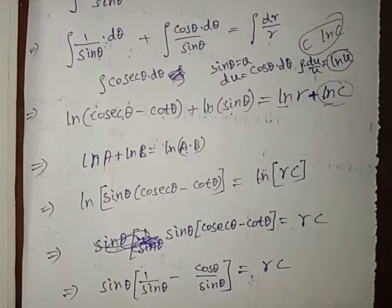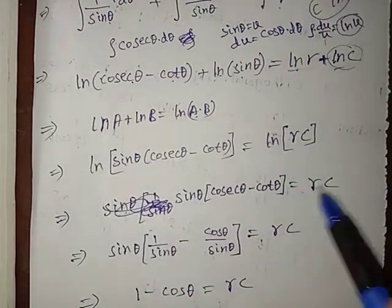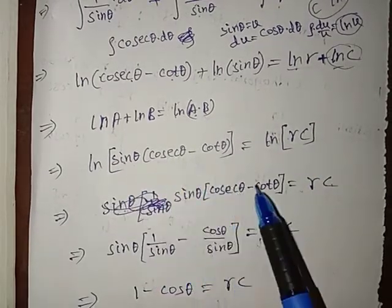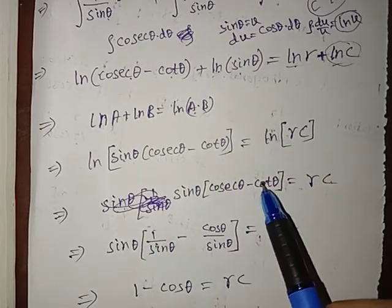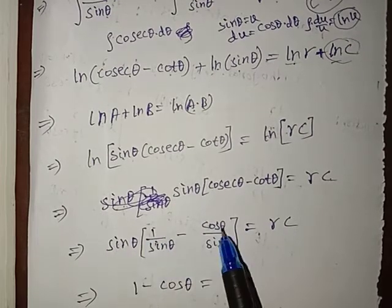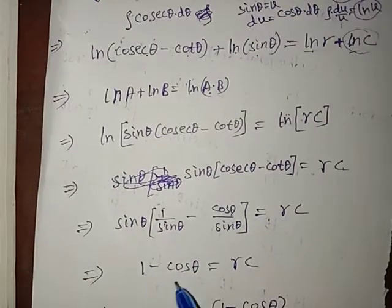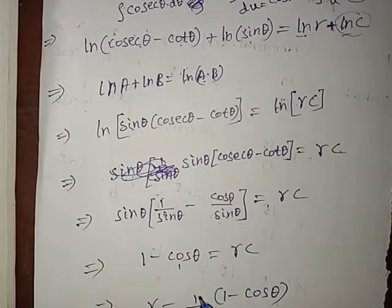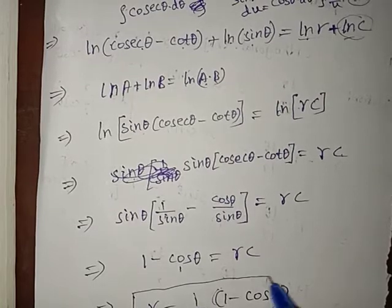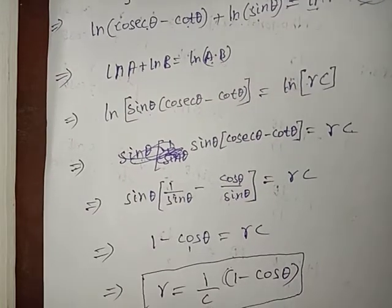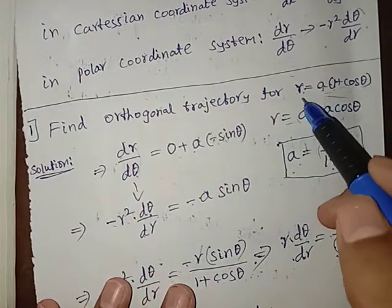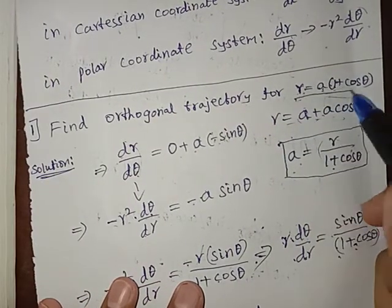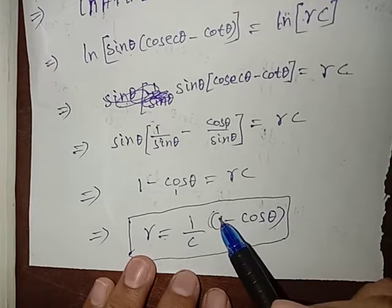So rc = sinθ(cscθ − cotθ). Since cscθ = 1/sinθ and cotθ = cosθ/sinθ, multiplying out gives rc = 1 − cosθ. Therefore r = (1/c)(1 − cosθ). This is the required orthogonal trajectory of r = a(1 + cosθ).